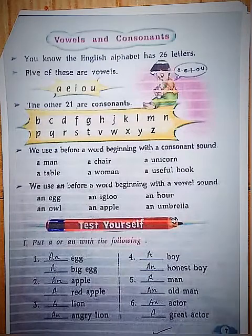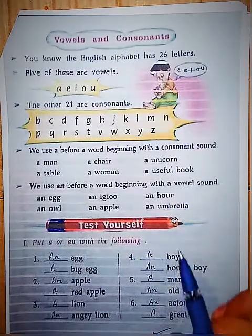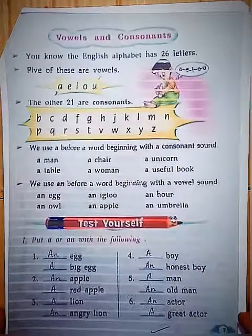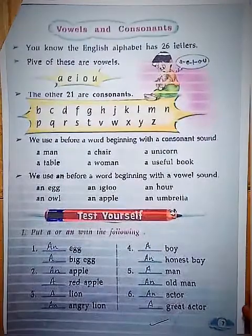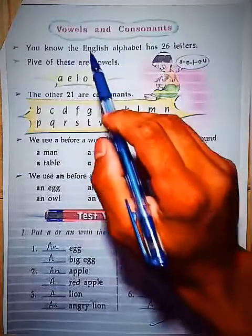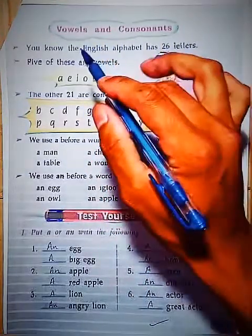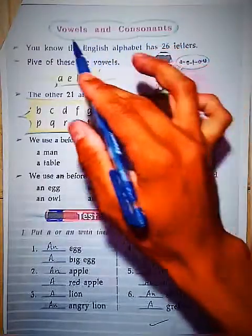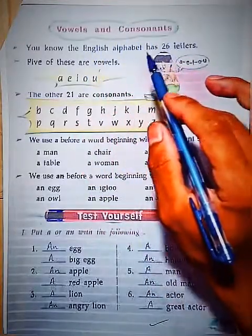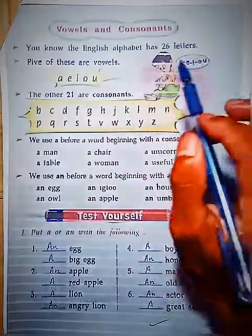We will see the video in our future. We will start with vowels and consonants. In Hindi, we call them स्वर (swear) and व्यंजन (vengeance). In Hindi grammar, these are स्वर और व्यंजन — similarly, in English, we call them vowels and consonants.